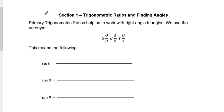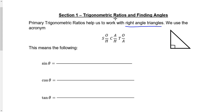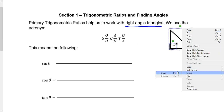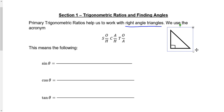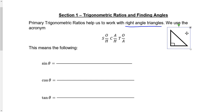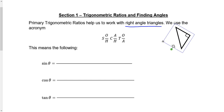Our primary trig ratios help us when we work with right angle triangles. These only work when you are actually working with a right angle triangle. As a reminder, this is a right angle triangle because one of our angles is a right angle. It doesn't matter how this triangle is rotated — it's still going to be a right triangle.